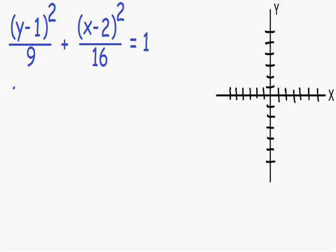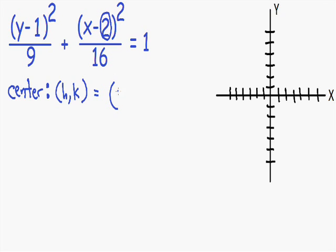The first thing we're going to do is find the center of the ellipse. The center is usually written in the form (h, k), where h is the x coordinate and k is the y coordinate. The h term is always the number next to x, and it's always the opposite sign. Since we have negative 2 next to x, our h term is going to be positive 2. Our k term is the number next to y — since we have negative 1 next to y, it's going to be positive 1. The number is always the same but the sign is always the opposite.